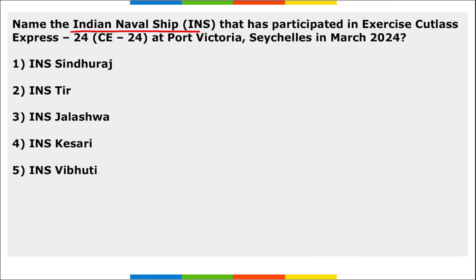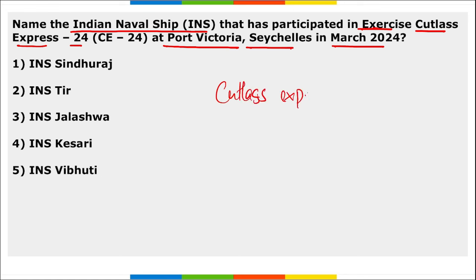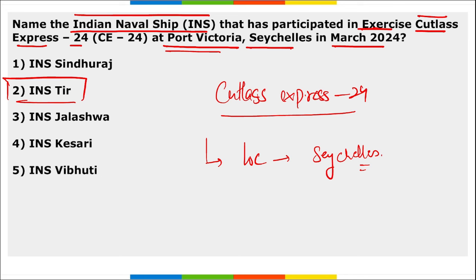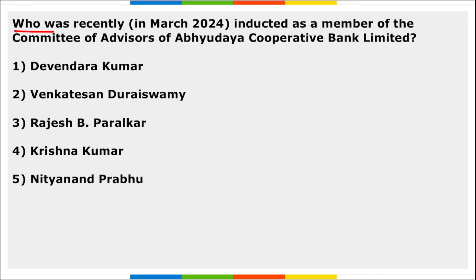Indian Naval Ship INS Tabar participated in Exercise Cutlass Express 24 (CE-24) at Port Victoria, Seychelles. Indian Navy has been participating in this exercise since 2019. Apart from India, 19 other nations also participated in this exercise.